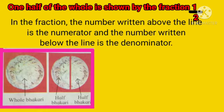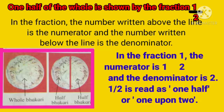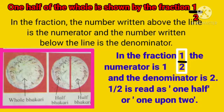In the Fraction, the number written above the line is the numerator and the number written below the line is the denominator. In the Fraction 1 upon 2, the numerator is 1 and the denominator is 2. 1 upon 2 is read as one half or 1 upon 2.